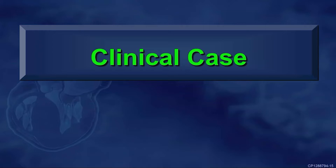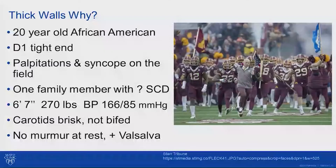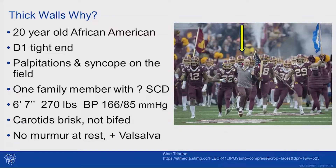Here is a 20-year-old African-American football player — a tight end who had a long history of palpitations and some syncope but never sought medical advice until he actually had syncope, at which point the team doctor sent him for evaluation. He had one family member with a possible history of sudden cardiac death. He was a large, somewhat hypertensive gentleman. His carotids were brisk but not clearly bifid. At rest he had no murmur, but with Valsalva, there was a prompt early murmur in the strain phase.